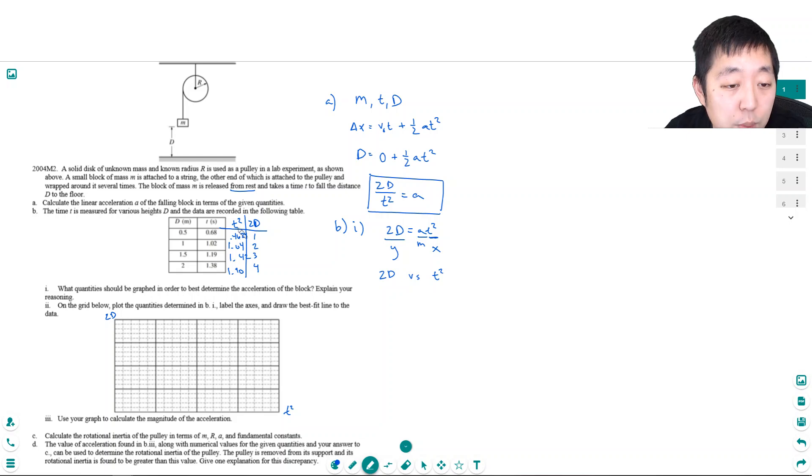So on the x axis I want t squared. So I want t squared down here. And I want 2d at the top here. So t squared is going to go from about 0.46 to about 2. So maybe this is 2. Then this would be 1, and this would be 0.5 and 0.6. And then vertically I want to just go 1, 2, 3, 4. So 1, 2, 3, and 4.